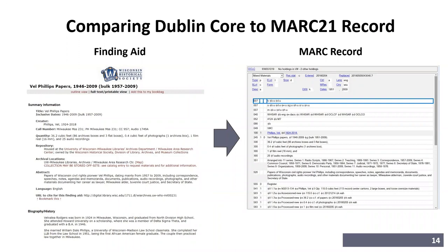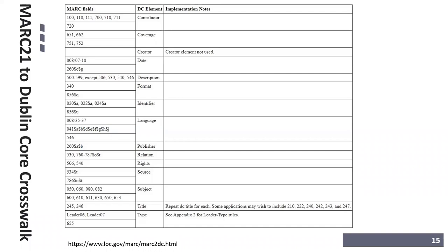In a MARC 21 to Dublin Core crosswalk chart, the MARC 21 fields in the first column map to the Dublin Core elements in the second column, with a third column offering implementation notes. For instance, the 245 and 246 MARC fields map to 'title,' with a note that you repeat the title tag for each entry. The 260 — which would be 264 in RDA — maps to 'publisher.' It's the same information just in a different format, as we saw in the EAD XML example.